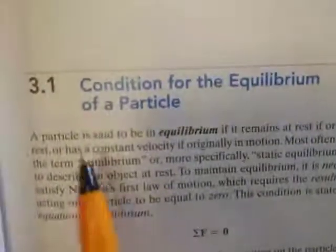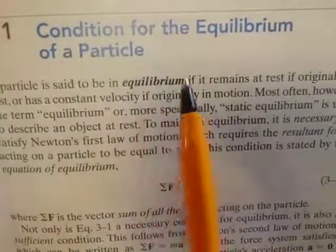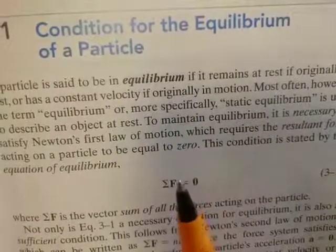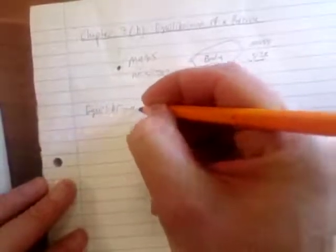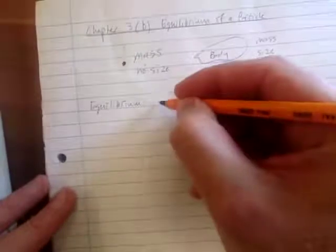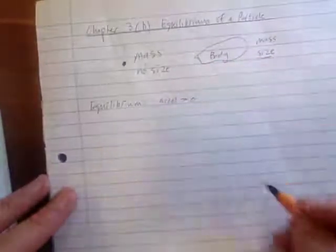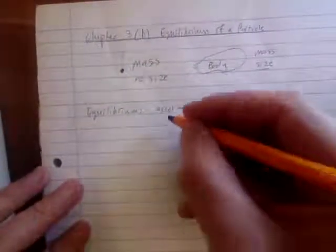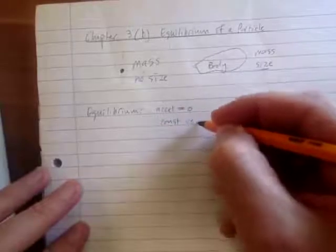Okay, and so this 3.1 says conditions for the equilibrium of a particle. Again, look at this word equilibrium, and what does equilibrium mean? Equilibrium essentially just means that the acceleration is equal to zero. Which means what? It means that it's either moving with a constant velocity, or it's at rest.